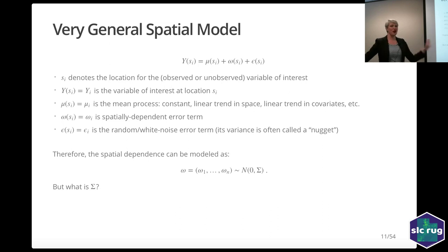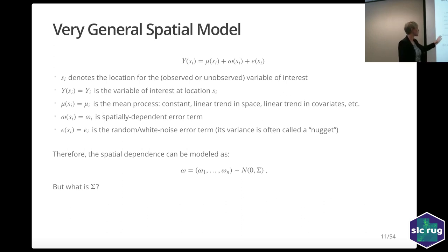A very general spatial model: Y is the response we're measuring. Mu is some mean process — it could be a regression or just a constant mean, observed at location s_i. Omega_i is my spatial noise, my spatial dependence. Epsilon_i is some random noise. Sometimes we don't include this random noise and just model everything with spatial Gaussian process noise. We model omega with mean zero and some spatial dependence structure. How we pick that dependence structure is what I'll talk about next.